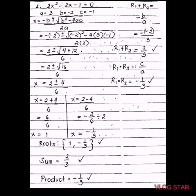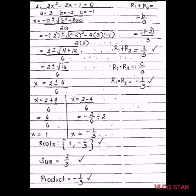To get the sum and product, the sum is R₁ plus R₂ equals negative B over A. Using our values: B is negative 2, and with the negative sign in the formula it becomes positive 2 over A which is 3 — so the sum is 2 over 3. For the product, C over A gives negative 1 over 3. You can also verify directly: 1 plus negative one-third is positive two-thirds, and 1 times negative one-third is negative one-third. Those are the final answers: the roots, the sum, and the product.